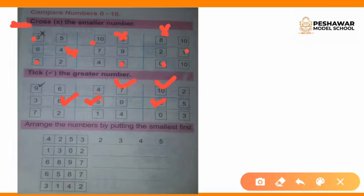Arrange the numbers by putting the smallest first. We have done small and larger; now these are matching with ascending order — smaller first, then larger. In the first question we have 2, 4, 2, 5 and 3. So we write: 2, 3, 4 and 5.